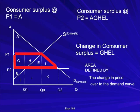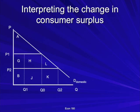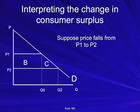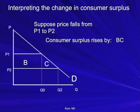Now let's interpret the various components of the change in consumer surplus — this will be quite helpful in tying this to real-world situations. If the price falls from P1 to P2, we get a consumer surplus increase of B plus C, which is the change in price over to the demand curve. Let's break up these two effects, B and C, into components.